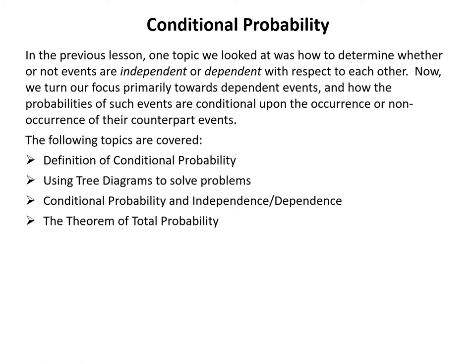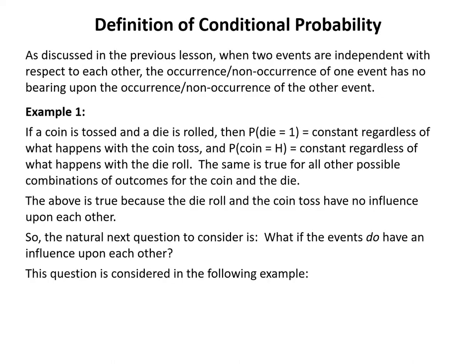As discussed in the previous lesson, when two events are independent with respect to each other, the occurrence or non-occurrence of one event has no bearing upon the occurrence or non-occurrence of the other. For example, if a coin is tossed and a die is rolled, the probability that the die comes up one is constant regardless of what happens with the coin toss, and vice versa. Now we consider: what if the events do have an influence upon each other?